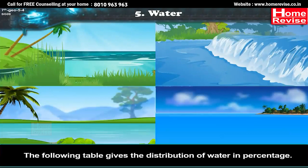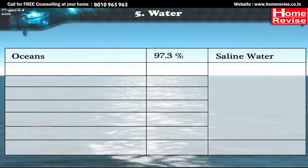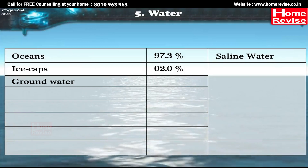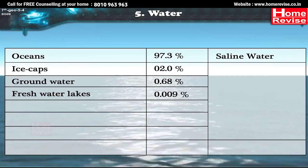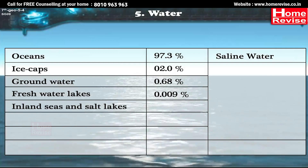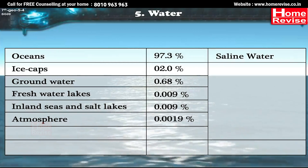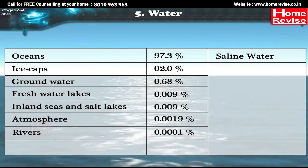The following table gives the distribution of water in percentage: Oceans 97.3% — saline water. Ice caps 2%. Ground water 0.68%. Fresh water lakes 0.009%. Inland seas and salt lakes 0.009%. Atmosphere 0.0019%. Rivers 0.0001%.